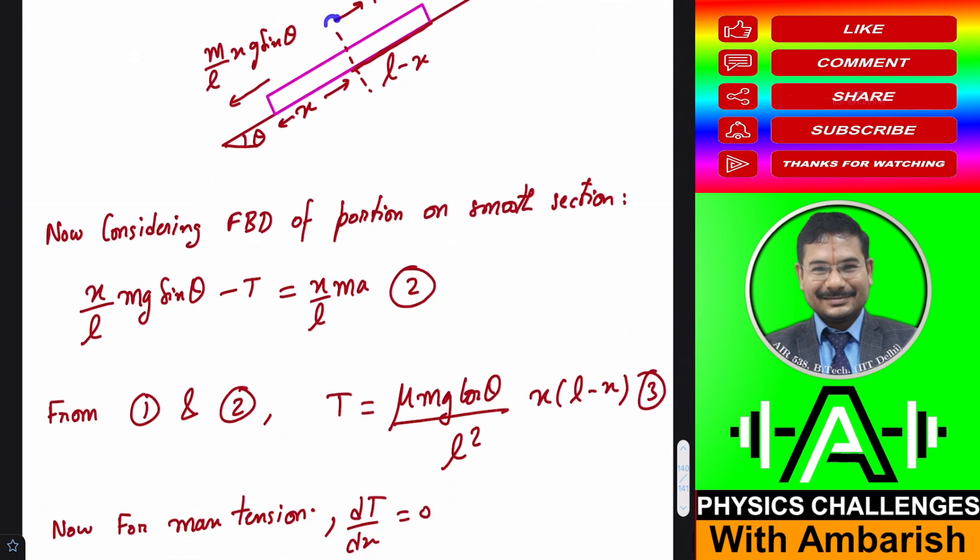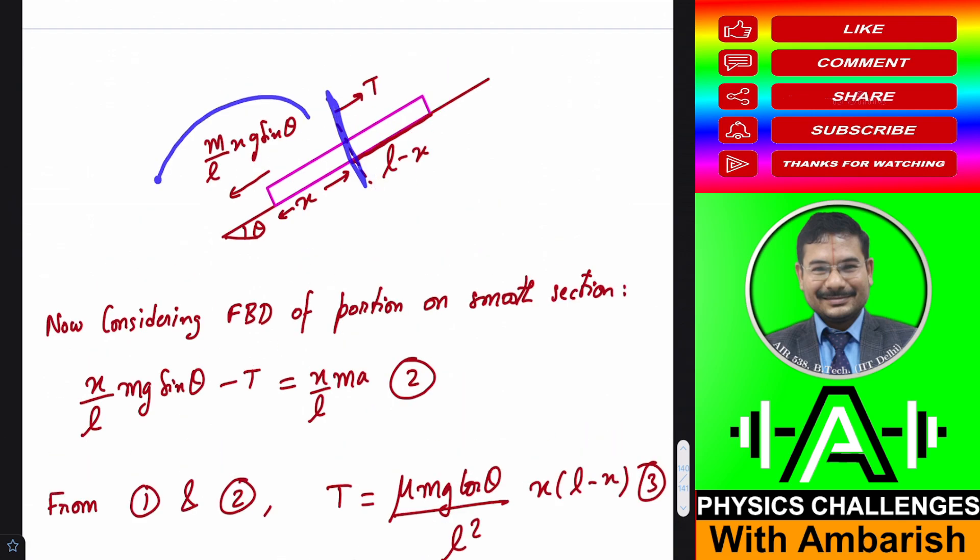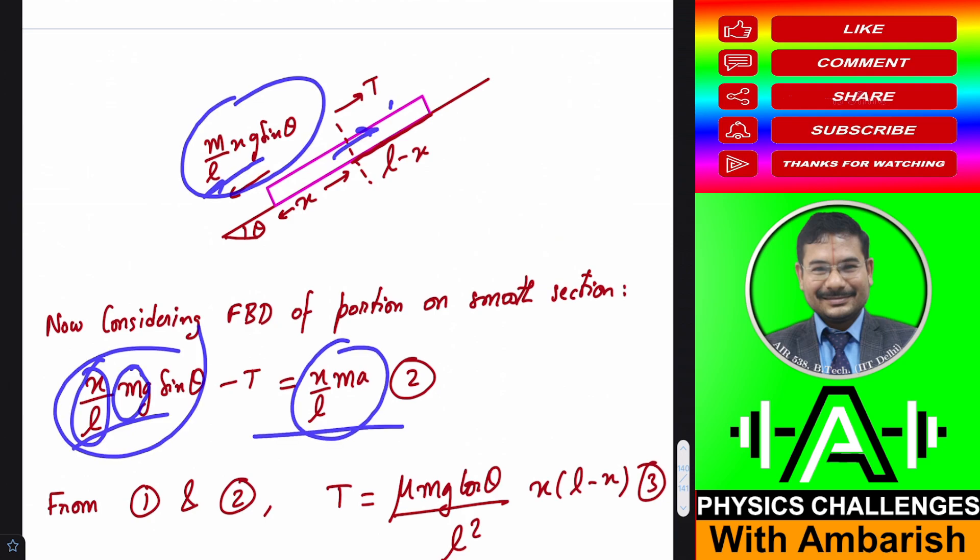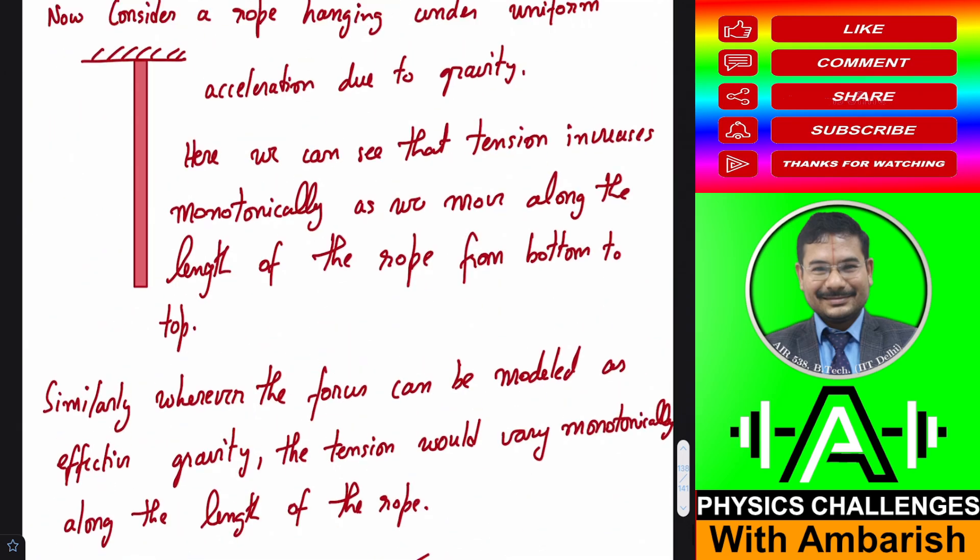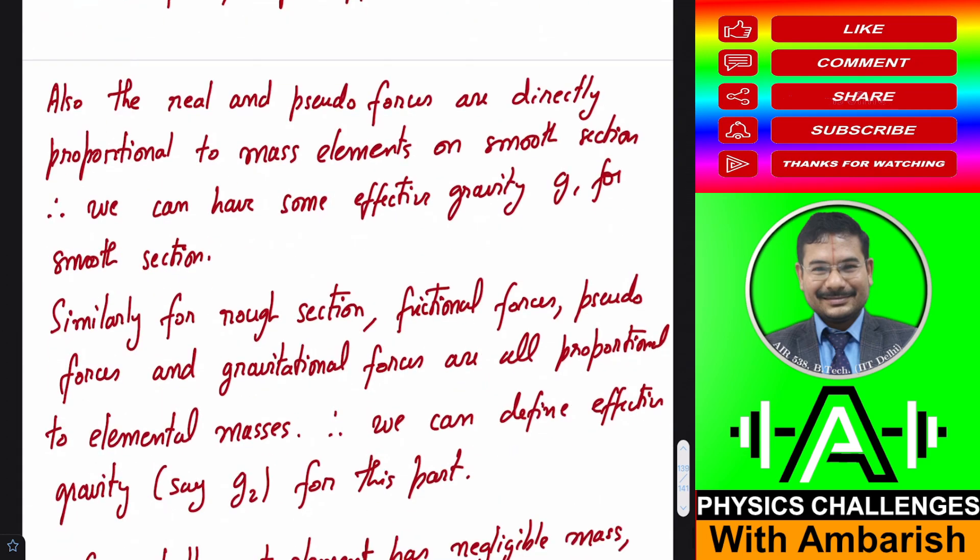So far I have not done much calculation except for calculating the acceleration. Now I know that maximum tension must occur here, so I will find the tension at this point. I will consider the FBD of this part. If you consider up to length X, the fractional mass becomes X by L into M. So X by L into MG sine theta minus tension T equals X by L into MA. And A I have already found in equation one, so I can substitute and solve for T.